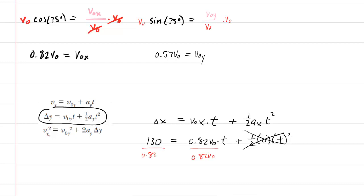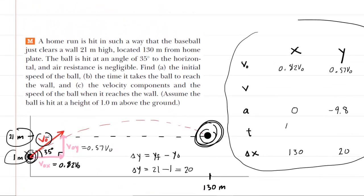Dividing both sides by 0.82 V-naught, we compute 130 divided by 0.82 to get approximately 159. So time equals 159 divided by V-naught. This doesn't give us a numeric value for time yet, but it's a useful expression. We enter 159 divided by V-naught into our table for both the x and y directions — the time in both directions is always the same.